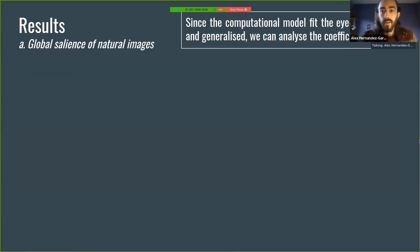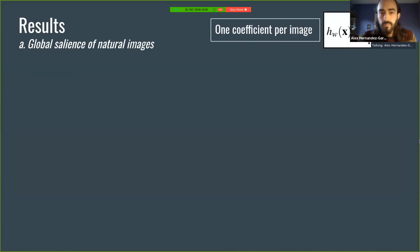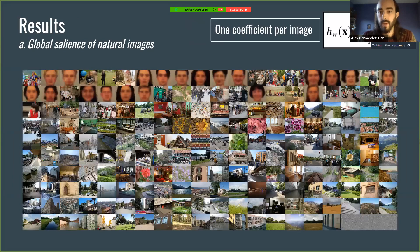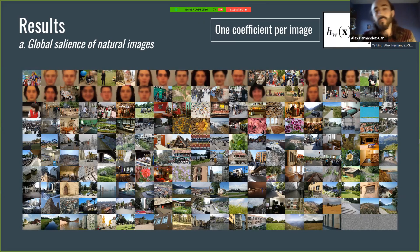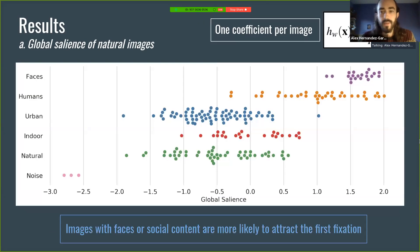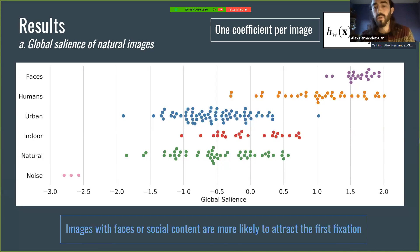The main results of our work come from looking at the coefficients of the images — one coefficient per image — which allows us to rank them. We observed that images containing faces, like close-up faces or humans, obtained the highest coefficients in the model. After that, images of natural and urban landscapes followed. As you can see in purple on top, the data points corresponding to faces and humans get the highest coefficients. We called these coefficients 'global salience,' because they model the likelihood of every image to be fixated first when presented next to another stimulus.